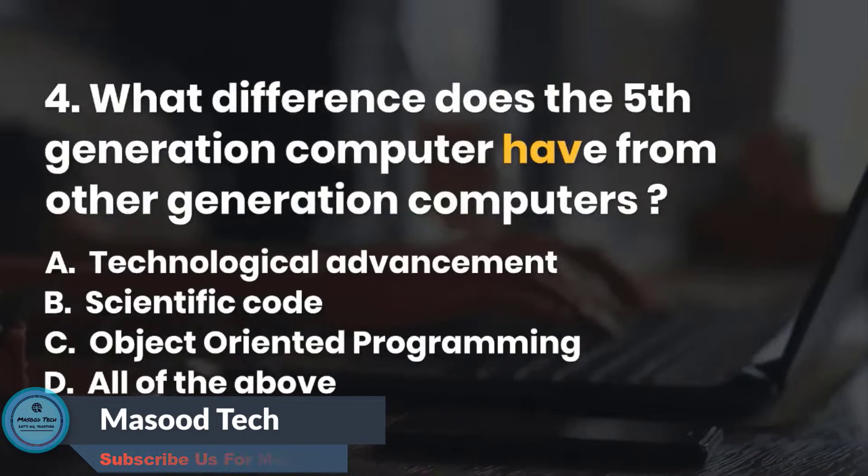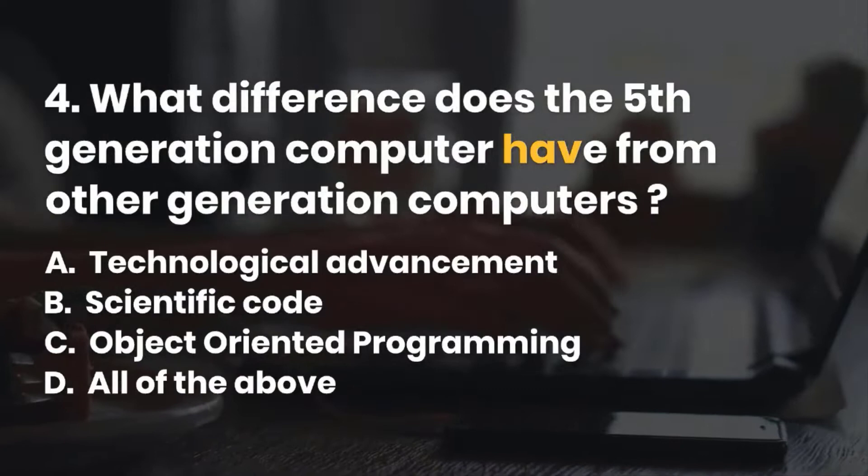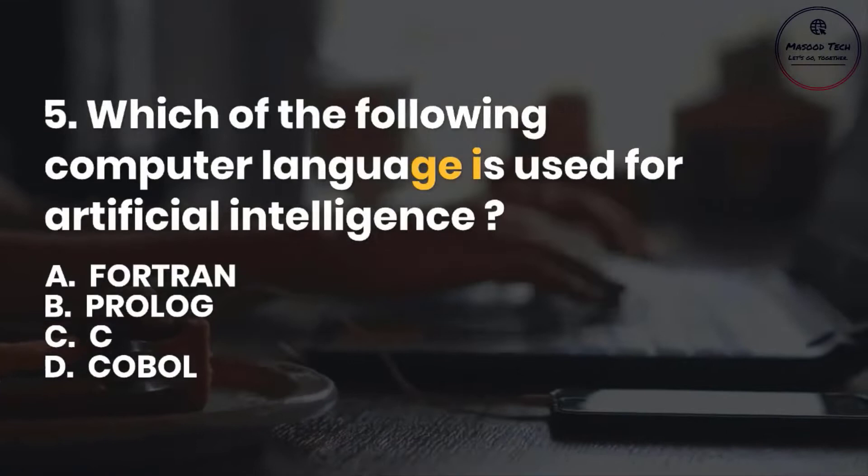Number 5. Which of the following computer languages is used for artificial intelligence? A. Fortran. B. Prolog. C. C. D. COBOL. Correct answer is B.